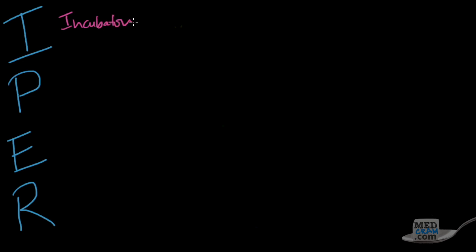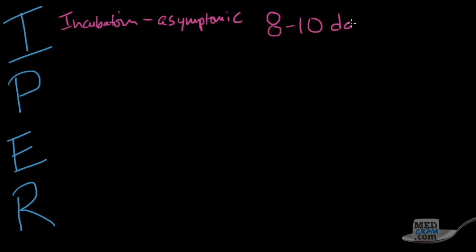There are four stages of measles virus infection, abbreviated I, P, E, and R. I stands for incubation period, P for prodrome, E for exanthem, and R for recovery and immunity. In the first phase — the incubation period — the patient is usually asymptomatic; they don't feel any symptoms. This can last from 8 to 10 days, meaning they're walking around for over a week without knowing they've been infected.